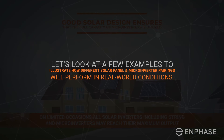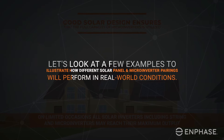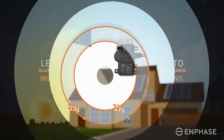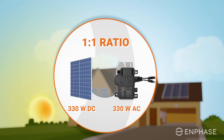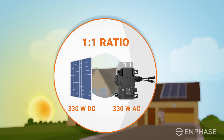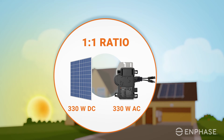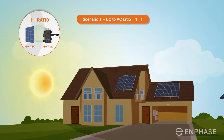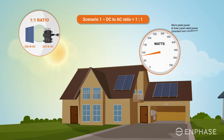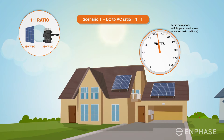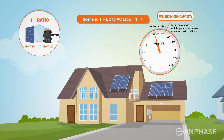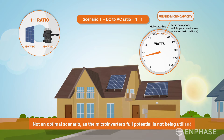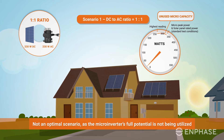Let's look at a few examples to illustrate how different solar panel and microinverter pairings will perform in real-world conditions. Here we have a pairing where the DC rated power of the solar panel is the same as the AC peak power of the microinverter — a DC to AC ratio of 1 to 1. During the sunniest time of year, when a solar panel's power output peaks, the highest level is well below the maximum capacity of the microinverter. This scenario is not optimal, as the microinverter's full potential is not being utilized.